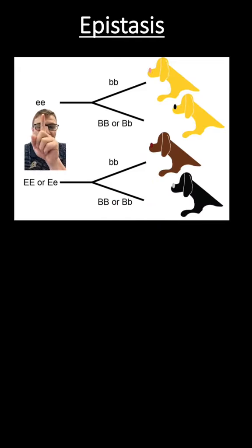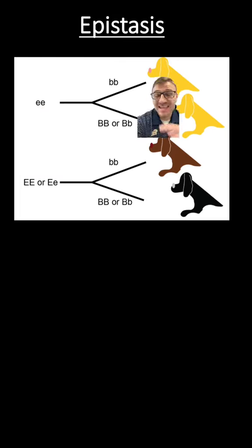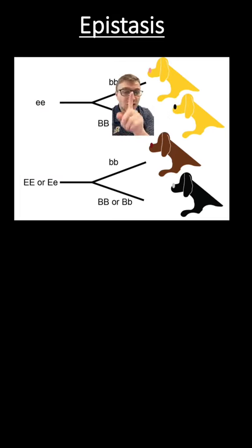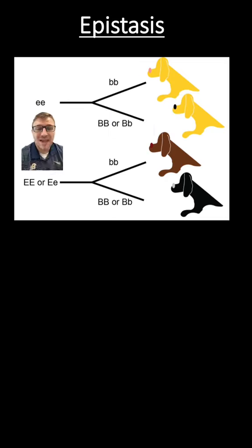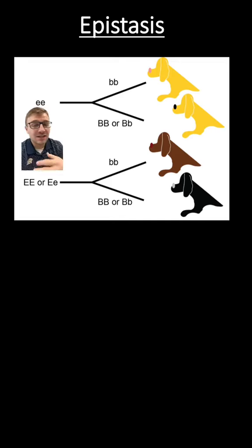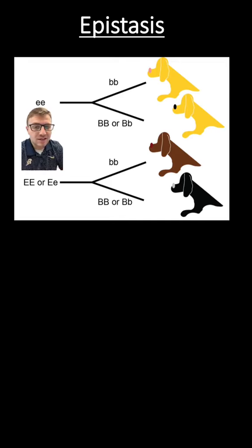However, if we have a homozygous recessive genotype in the first gene, it doesn't matter what the second genotype is going to be — you're going to produce a yellow lab. That's because this first gene controls the second gene. If this first gene is turned off, or is homozygous recessive, it doesn't matter what that second gene type is going to be. You're going to produce a yellow lab.